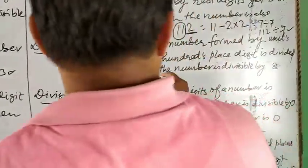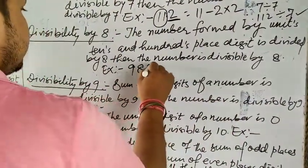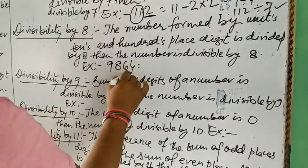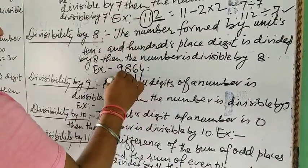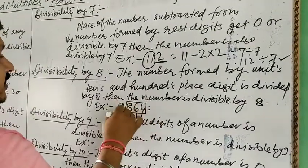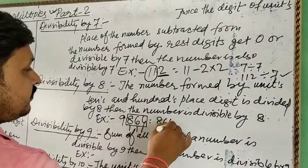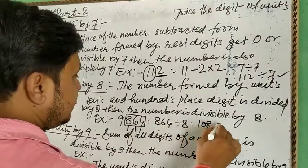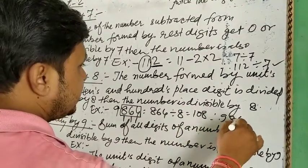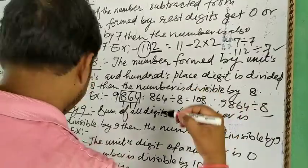Divisibility of 8: The number formed by the unit's digit, ten's digit, and hundred's digit. For example, 9864: the last three digits 864 is divided by 8, so 9864 is also divisible by 8.